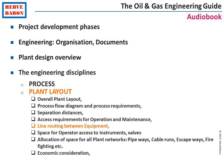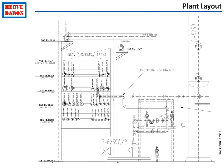The routing of lines between equipment also impacts the position of equipment. Enough flexibility must be provided in the routing of lines connecting to equipment so that thermal expansion will not result in excessive forces on equipment nozzles. This is particularly important for rotating machinery, as excessive forces could lead to machinery misalignment.